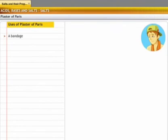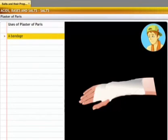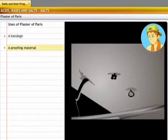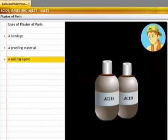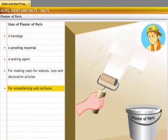Some of the uses of plaster of Paris are for setting fractures since it hardens when mixed with water and sets in a short time, as a fire and waterproofing material, as a sealing agent in the laboratory for sealing air gaps in apparatus where air tight arrangement is required, for making casts for statues, toys and decorative articles, and for smoothening wall surfaces.